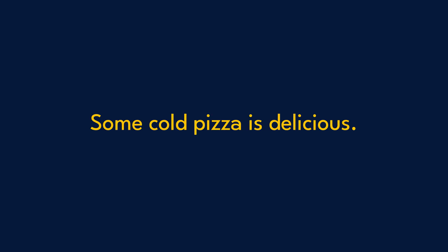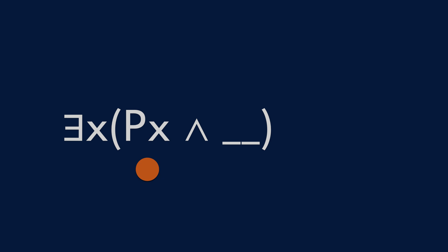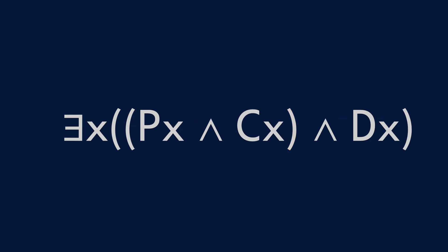Let's try another one: 'Some cold pizza is delicious.' The 'some' here is obvious, so we start with the existential quantifier. The existential typically pairs with a conjunction, so: 'There is an X such that X is a pizza, and it's cold, and it's delicious.' Simple as that. Some professors want you to add parentheses, but just make whatever small adjustments are necessary for your class or textbook.